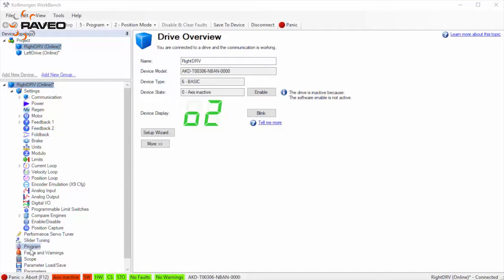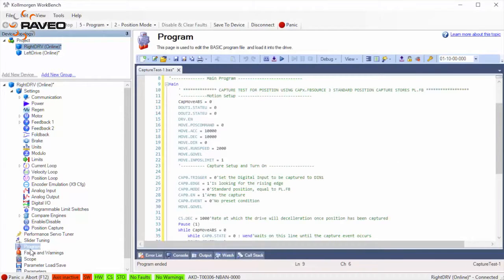A simple program has been set up to capture the motor's position when a trigger comes in on digital input 1. The following parameters are used to set up the trigger.